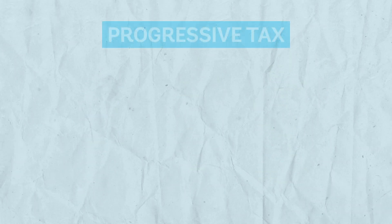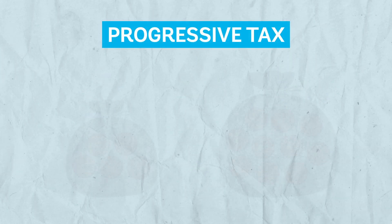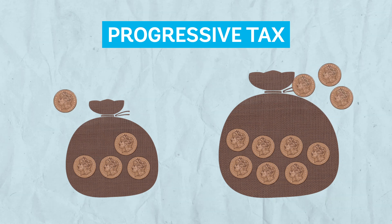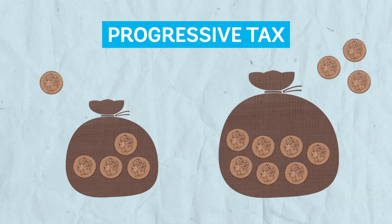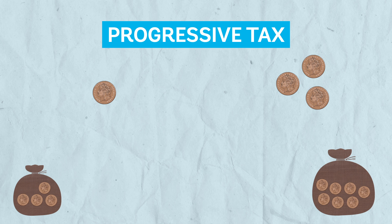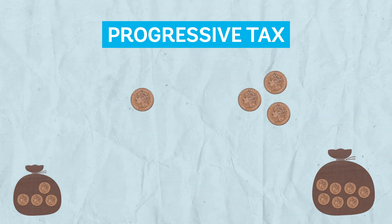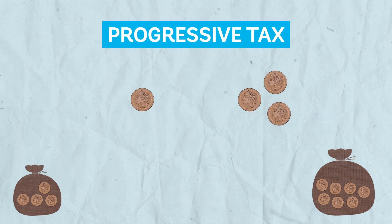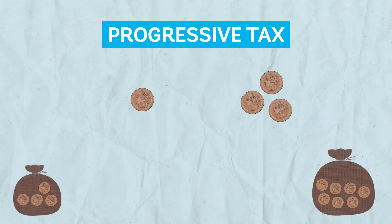Taxes are progressive if those who have more pay a larger share of their incomes. For example, income taxes usually have a higher tax rate for higher income individuals.